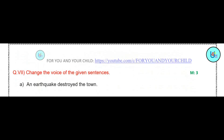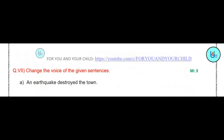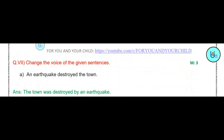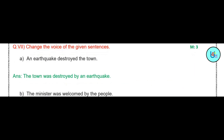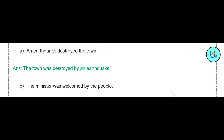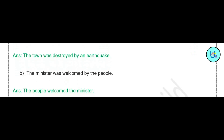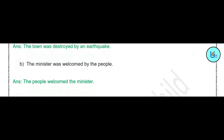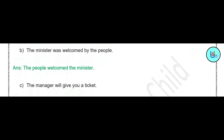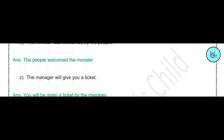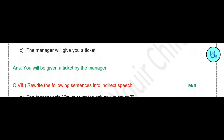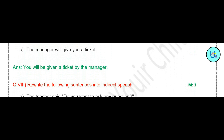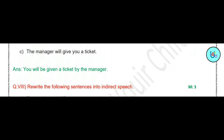Question number 7: change the voice of the given sentences. 'An earthquake destroyed the town.' Answer: 'The town was destroyed by an earthquake.' 'The minister was welcomed by the people.' Answer: 'The people welcomed the minister.' 'The manager will give you a ticket.' Answer: 'You will be given a ticket by the manager.'